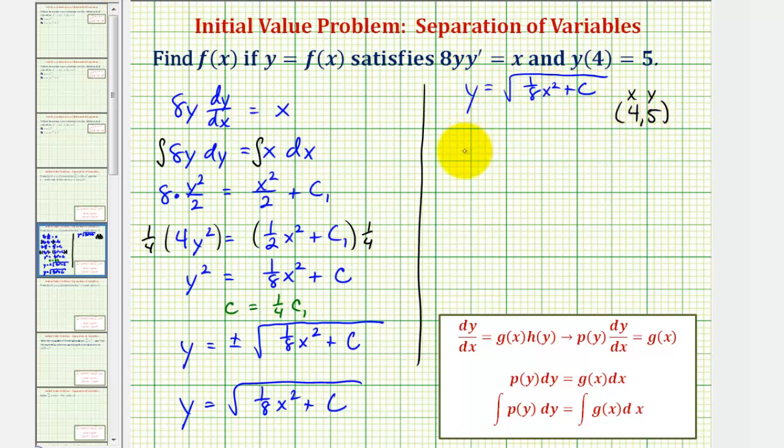So if y is 5, we'd have 5 equals the square root of 1/8 times 4 squared plus c. Well 4 squared is 16, 16 times 1/8 is 2. So we have 5 equals the square root of 2 plus c. So to solve for c, we'll now square both sides of the equation. So we have 25 equals 2 plus c, and therefore c equals 23.